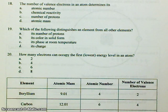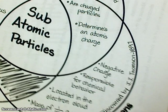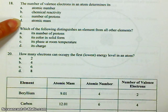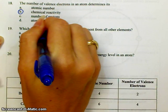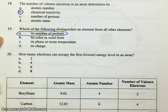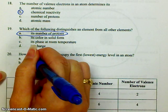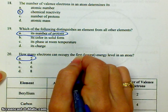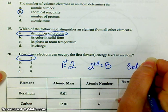Number 18: the number of valence electrons in an atom determines — we put on the Venn diagram that electrons are responsible for chemical behavior. Valence electrons are responsible for chemical reactivity, so the answer is B. Which of the following distinguishes an element from all other elements? That is the number of protons. How many electrons can occupy the first energy level? That's going to be 2. In the second energy level you can have 8, and in the third energy level you can have 8.